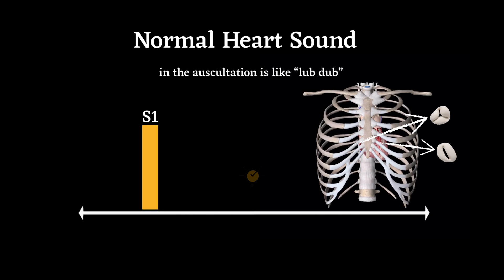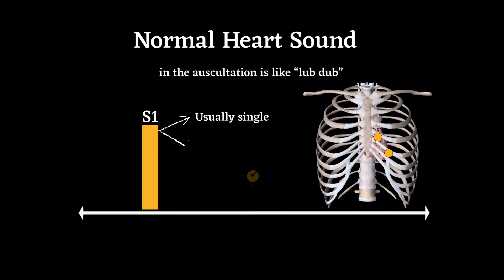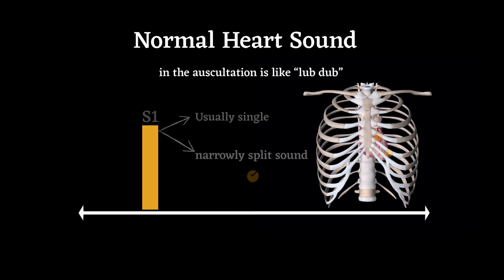S1 is best heard at the fourth intercostal space and fifth intercostal space in the mid-clavicular line, which is the area of the tricuspid and mitral valves. It is usually a single or narrowly split sound.